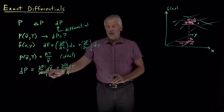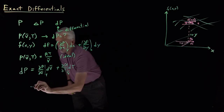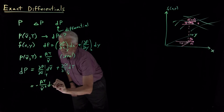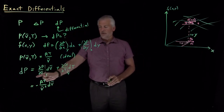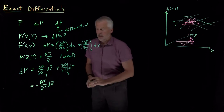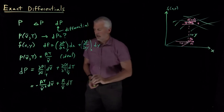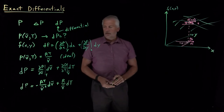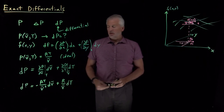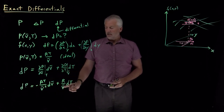That change in p is: (∂p/∂V̄) at constant T times dV̄, plus (∂p/∂T) at constant V̄ times dT. Since we know the equation of state, we can calculate those derivatives. The derivative of pressure with respect to V̄: the derivative of 1/V̄ is −1/V̄², so we get −RT/V̄². The derivative with respect to T is easier: the derivative of RT/V̄ with respect to T is just R/V̄.